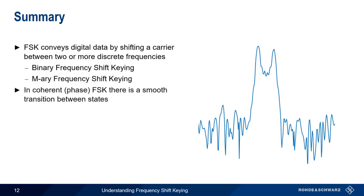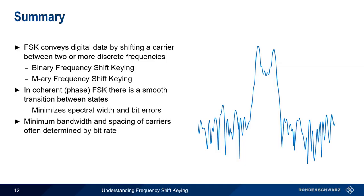Coherent FSK avoids abrupt phase transitions between states, and this minimizes both the resulting spectral width and bit errors. The minimum bandwidth of an FSK signal, and the necessary minimum spacing between the carriers, is often determined by the input bit rate, with higher bit rates requiring a wider separation of the tones.